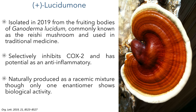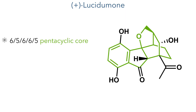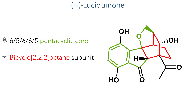Interestingly, this compound is naturally produced as a racemic mixture, but only one of the isomers shows biological activity against the COX-2 enzyme. The molecule presents several challenges for synthesis, including a unique 6-5-6-6-5 pentacyclic core that contains a bicyclo[2.2.2]octane subunit.